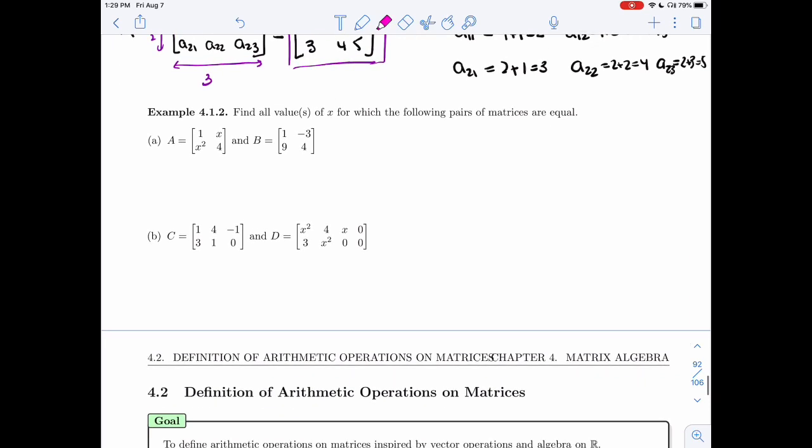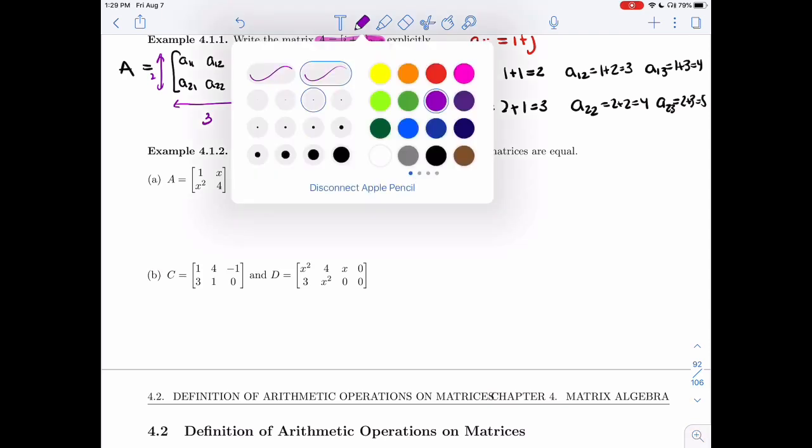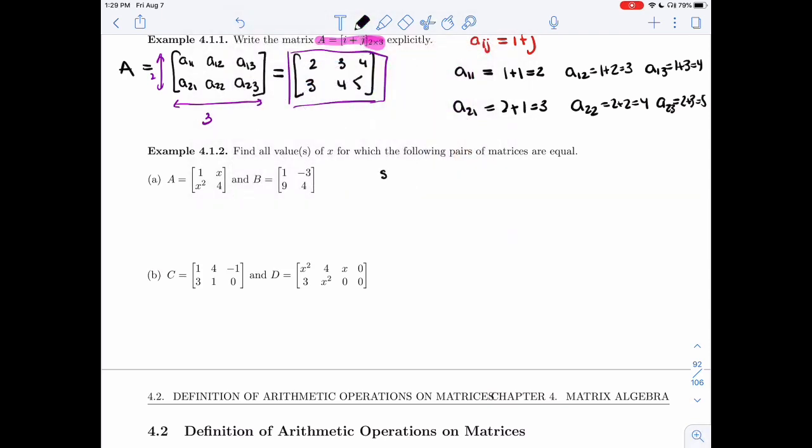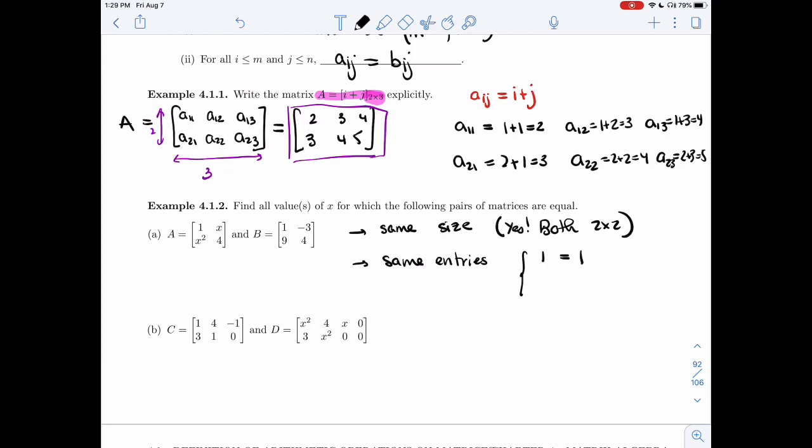In example 4.1.2, we'll look a bit more about what it means for matrices to be equal. So I'm giving you pairs of matrices, and you have to tell me when those would be equal. So first condition is that they have the same size. And in this case, they're both 2 by 2. So I don't have any size issues here. And so then I need same entries. And so the 1, 1 entries need to be the same. 1 equals 1. That's fine.